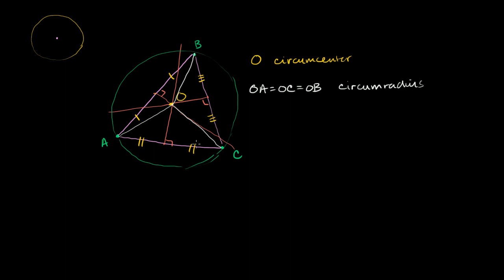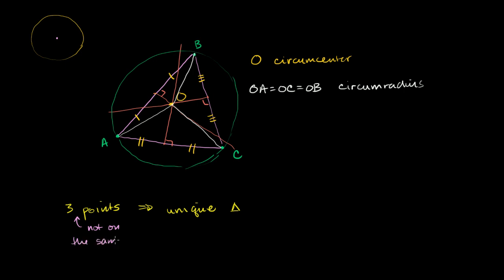Now everything we talked about just now is all review. But I went over it just to reinstate a pretty interesting idea: if you give me three non-collinear points — three points not on the same line — that defines a unique triangle. For any unique triangle, you have a unique circumcenter and circumradius.